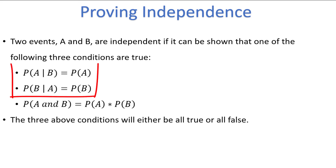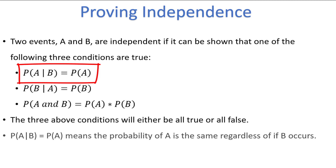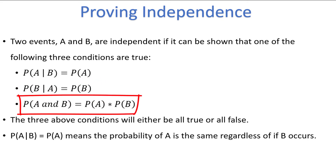Glancing at the first two formulas, they flow logically from the definition of independence. Take the first statement: the probability of A given B is equal to the probability of A. The probability of A given B means the probability that event A occurs given that event B also occurs. If A and B are independent, the occurrence of B shouldn't make any difference to A's probability — that's exactly what this statement is saying. The second statement is just the first one with B and A switched around, and the third one is the joint probability formula for independent events, which we looked at earlier.